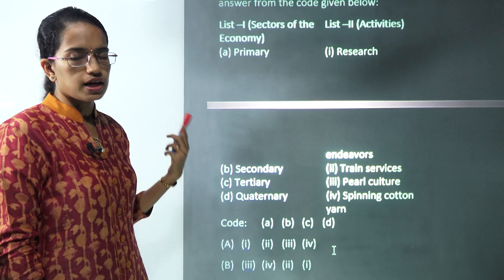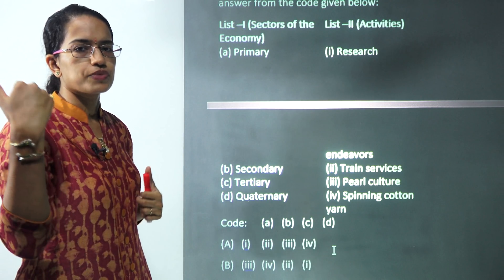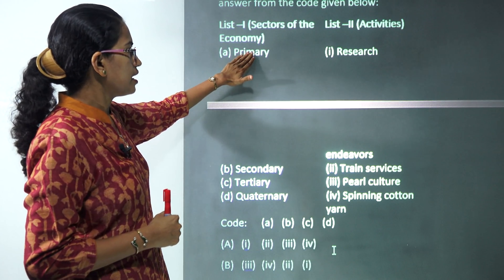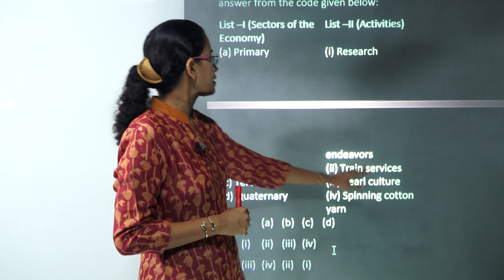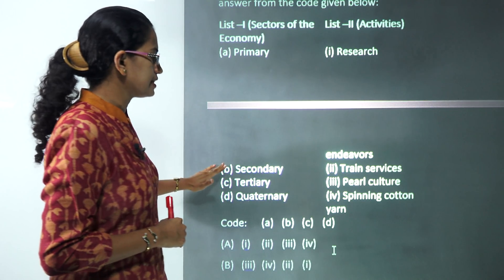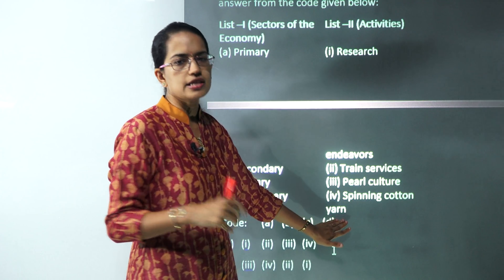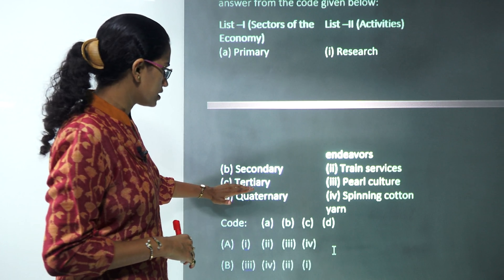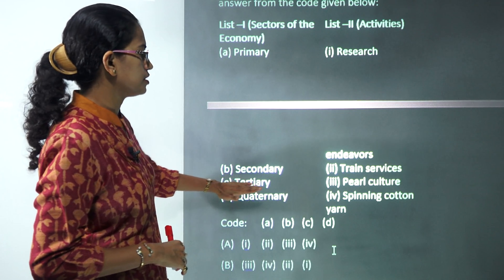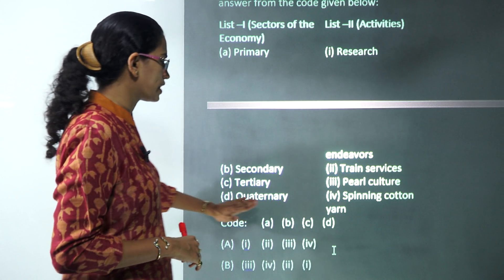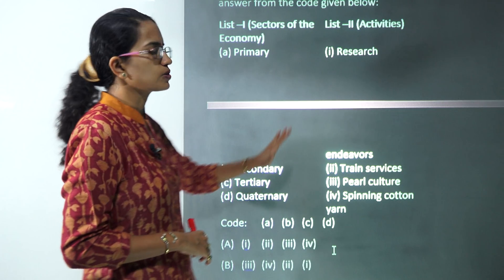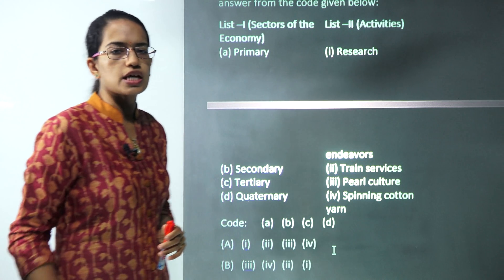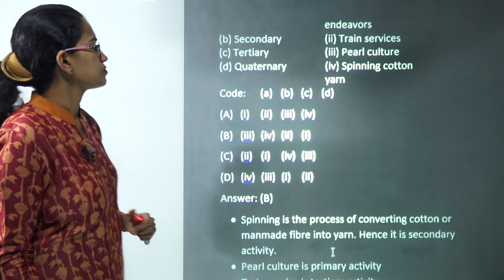For economic sectors matching: primary sector includes pearl farming, secondary sector includes spinning cotton yarn, tertiary sector includes train services, and the quaternary sector refers to R&D — research endeavors. These are the correct matches for this question.